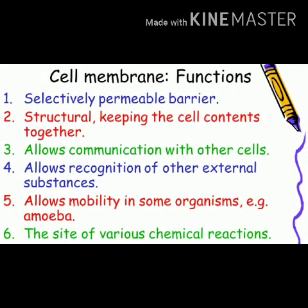The first is cell membrane. It is the boundary of the cell, that is the outermost covering of the cell, and is also called the plasma membrane. It has pores on it and allows only certain selective substances to pass through it, and therefore is also called the semi-permeable membrane.